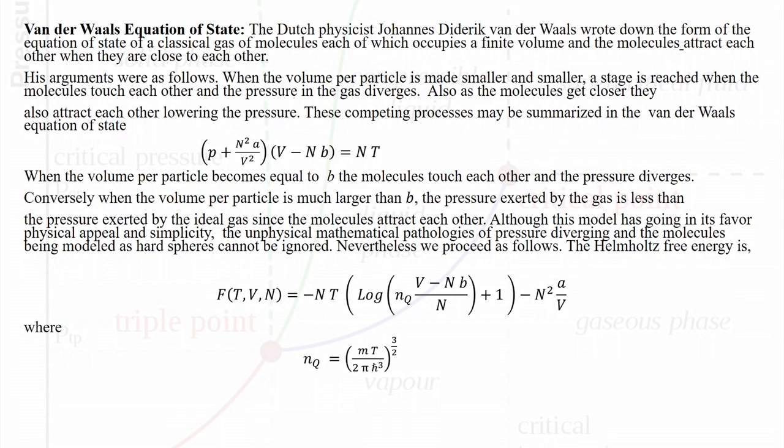The other postulate, concomitant with this idea, is that each molecule has a certain finite volume. As a result, the volume actually available to the fluid is the total volume in the box minus the volume occupied by the molecules. These are the two postulates that van der Waals made about his real fluid.